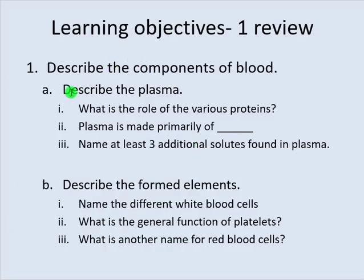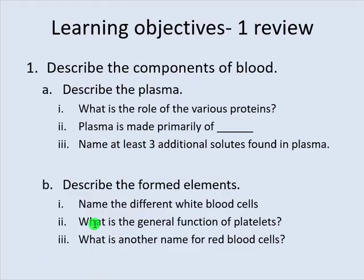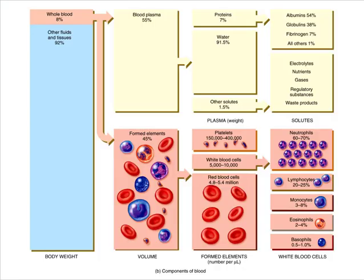To wrap this up: we've described plasma and looked at the role of various proteins. We know plasma is made mostly of water. We've named solutes found in plasma — things like glucose, amino acids, ions, gases, and various waste products. What are the formed elements? We've named the different white blood cells: neutrophils, lymphocytes, monocytes, eosinophils, and basophils — the 'Never Let My Engine Blow' mnemonic. Students simply need to recognize those names as white blood cells.